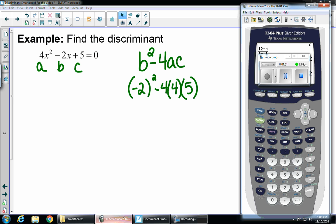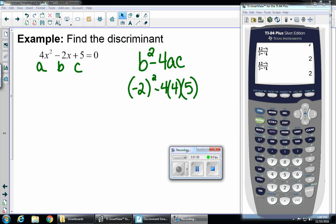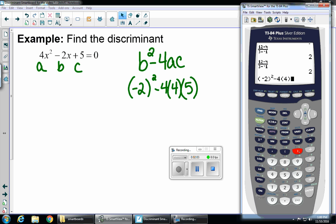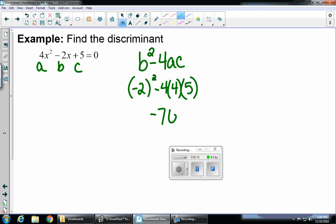Now I'm going to go to my calculator and type this in. So let me move this so you can see. So on my home screen, negative 2 squared minus 4 times 4 times 5. And my discriminant is going to give me negative 76.